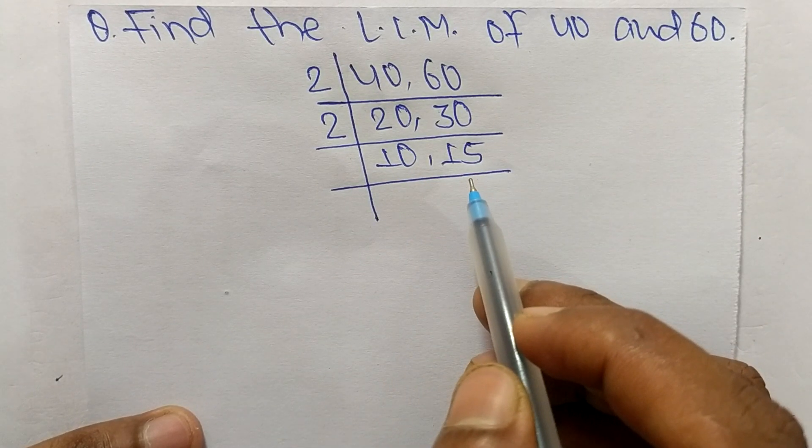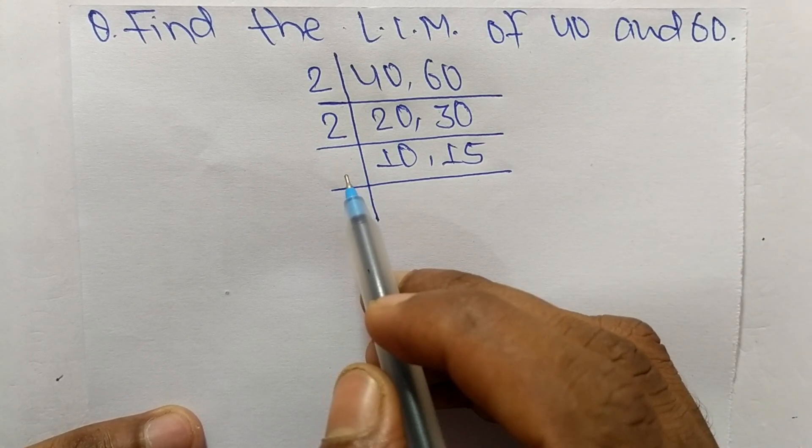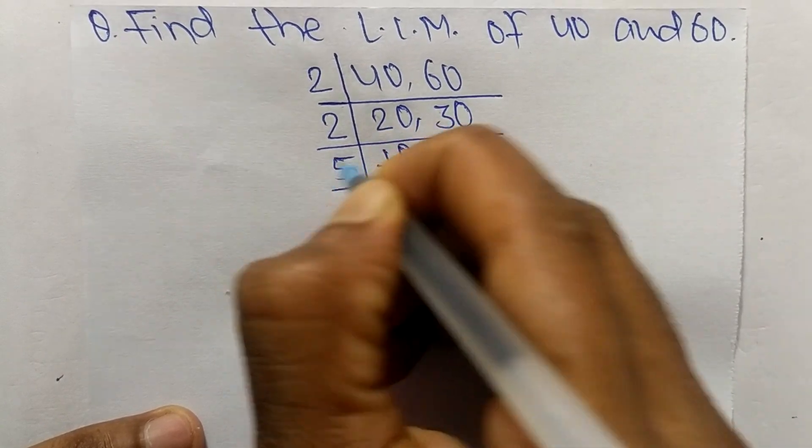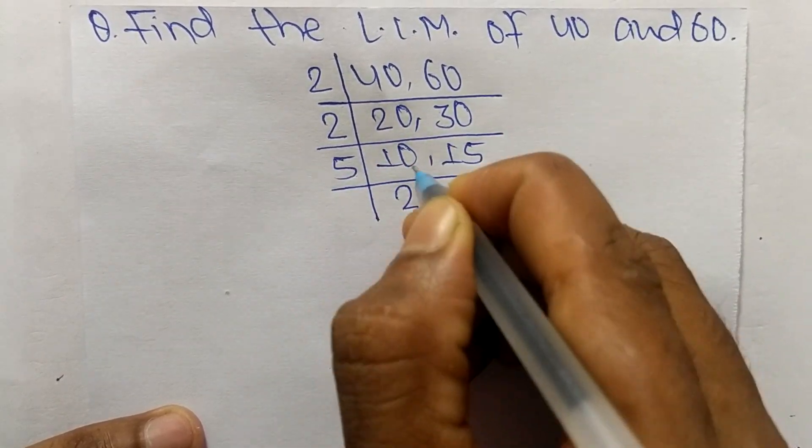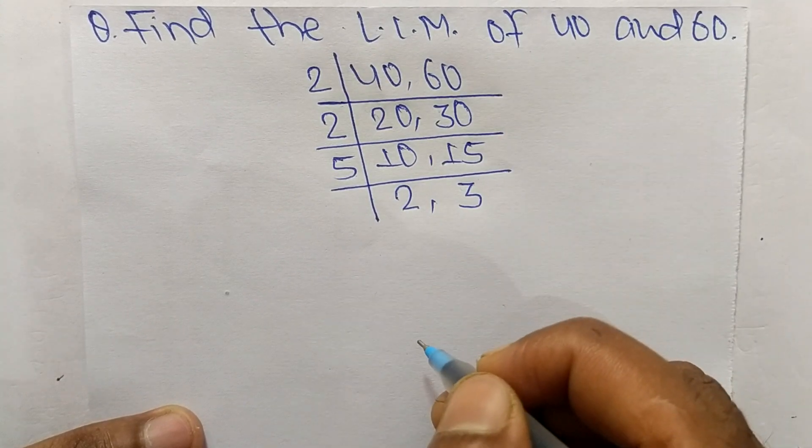We choose the number greater than 2 that can exactly divide 10 and 15, so the number is 5. 5 times 2 means 10 and 5 times 3 means 15. At last we have 2 and 3 which are not exactly divisible by the same number.